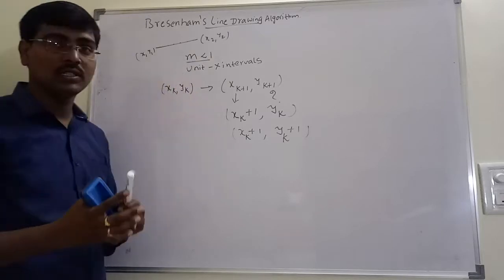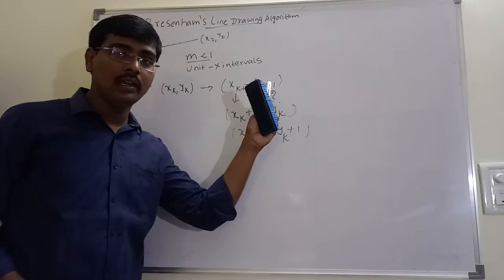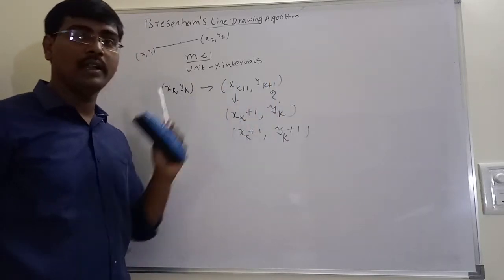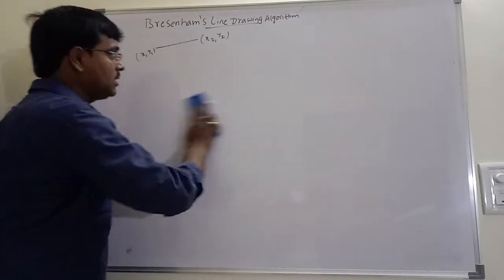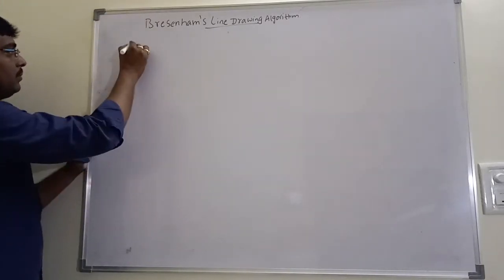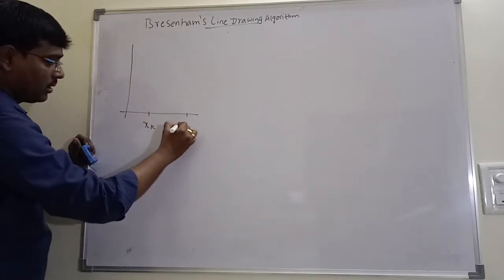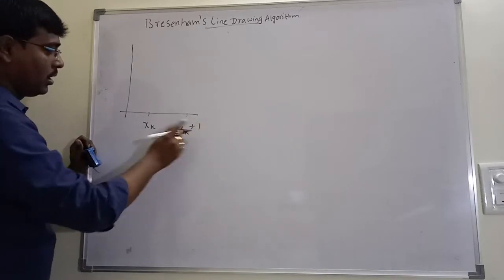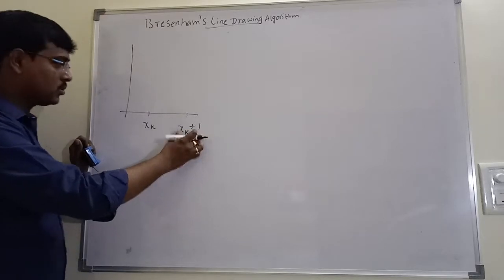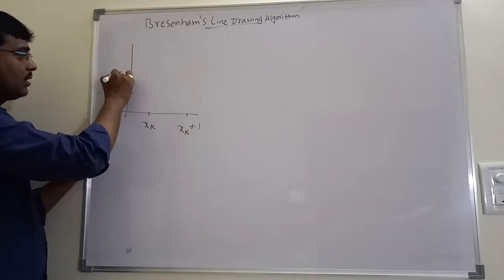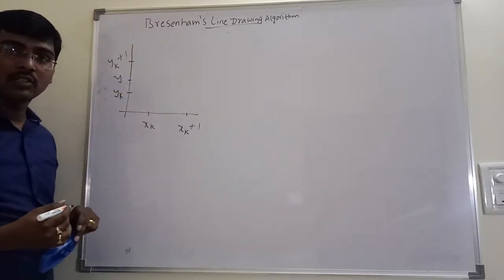Similarly, if slope is greater than 1, the y coordinate is unit incremented and we need to find the x coordinate. Now suppose this is the diagram. We have xk and xk+1 as unit x interval. Assume this one as yk and this one as yk+1, with the intermediate point as y.